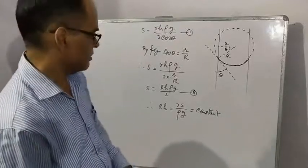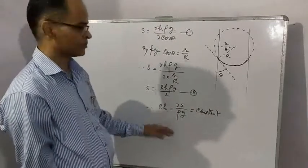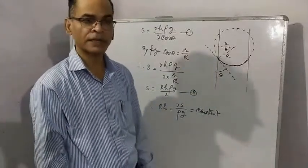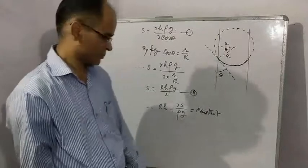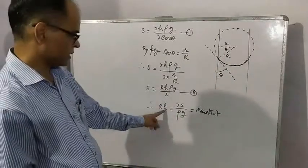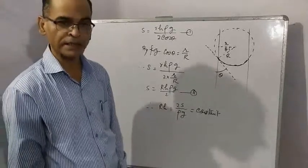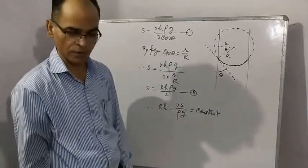The answer is no, liquid will not come out because R into h is a constant. If h is reduced because sufficient length is not given to the capillary tube, then accordingly radius of curvature will increase, but liquid will never come out.